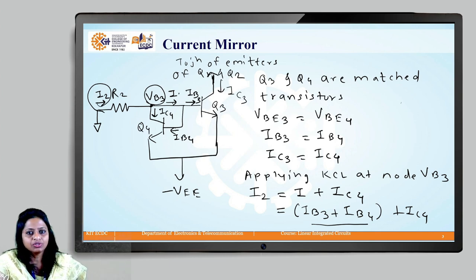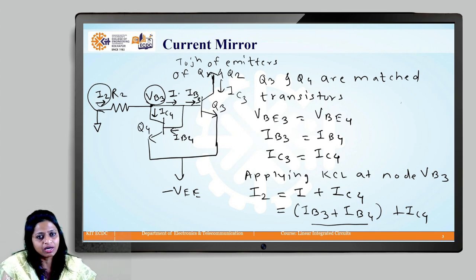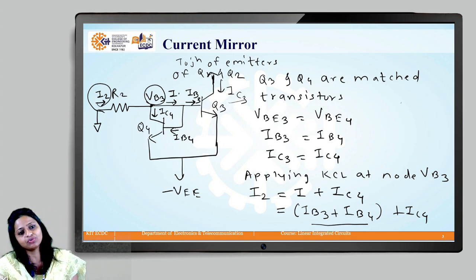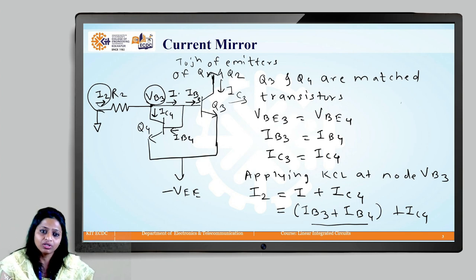Here if you see that the current that is flowing into this branch has been mirrored into this branch that is IC3. This is how the current mirror circuit works that is replicating the current that is flowing into one branch into the other branch or we can say that it is just like forcing current flowing into the circuit to the current that is flowing out of the circuit.